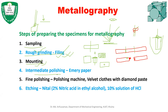Step four is intermediate polishing. We use emery papers to make a finer surface, starting from 100 grit up to 1200 grit. The higher the grit number, the finer the particles on the emery paper, and the better the surface finish obtained with 1200 grit.